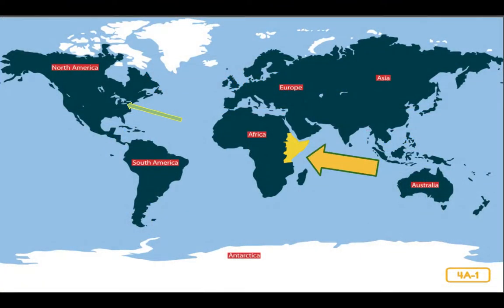Today we are going to be learning about another type of habitat called a grassland habitat. There are many grassland habitats in the world, but we will be learning about one in particular: the East African savannah. Savannah is another word for grassland. Boys and girls, on this map, this big yellow arrow points to where we are going to be learning about, and that skinny green arrow points to the location of where you live in Pennsylvania. Listen carefully to find out how the East African savannah may be the same or different from the Arctic and the Sonoran Desert habitats.